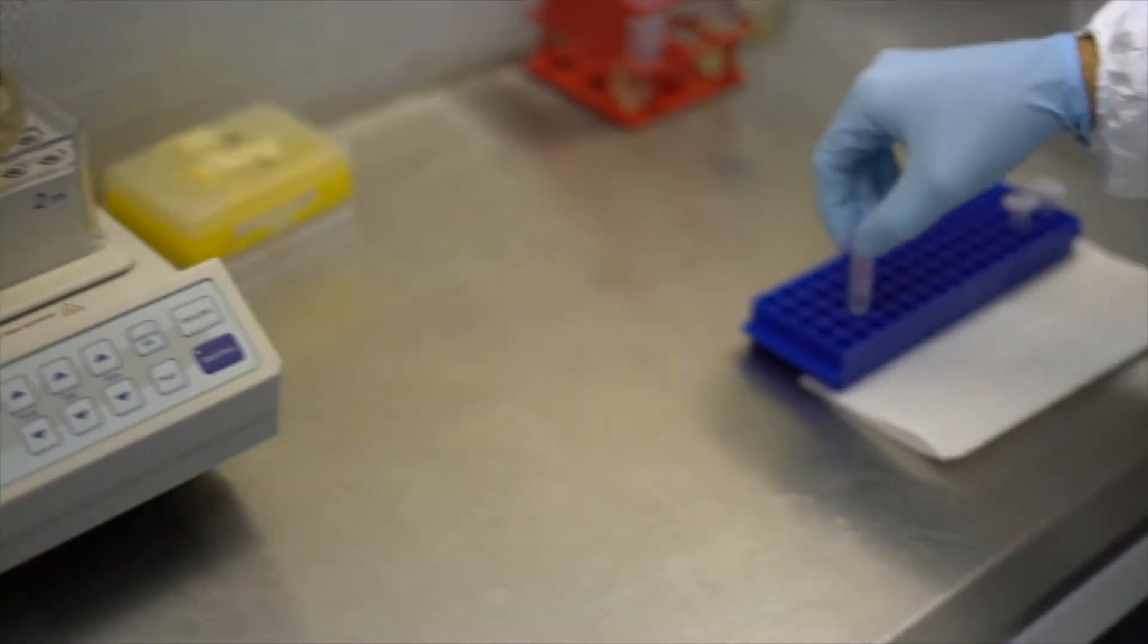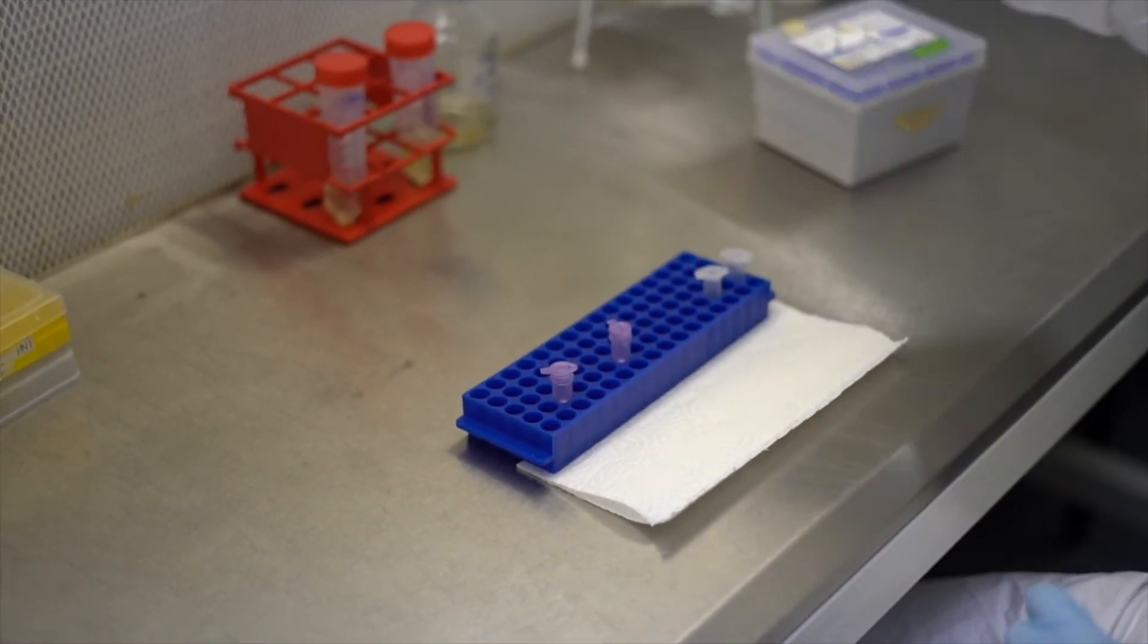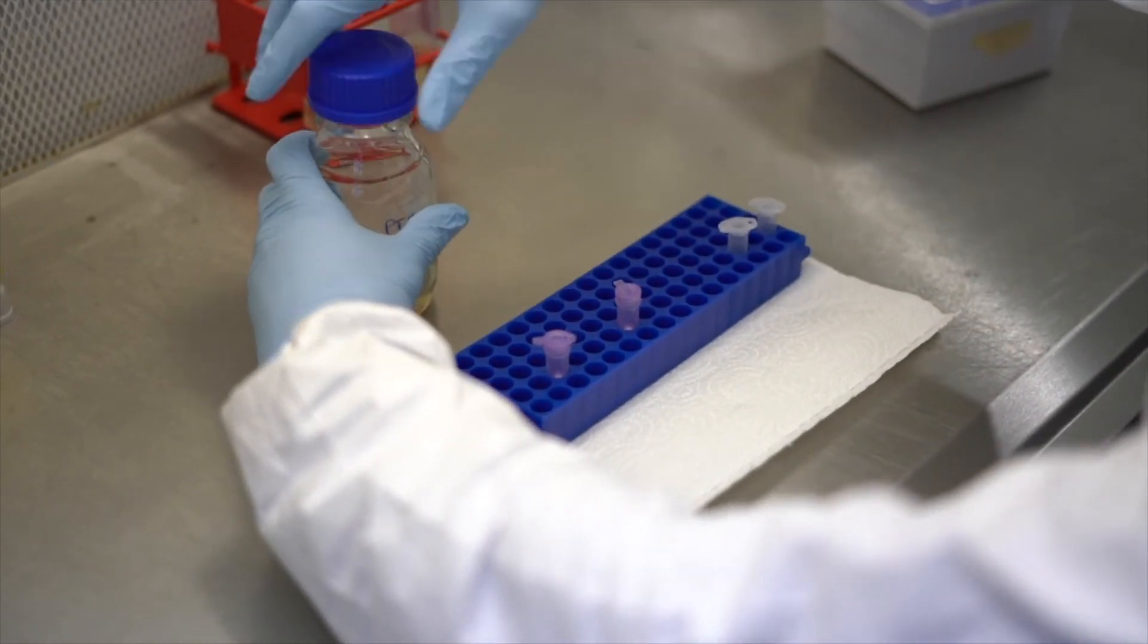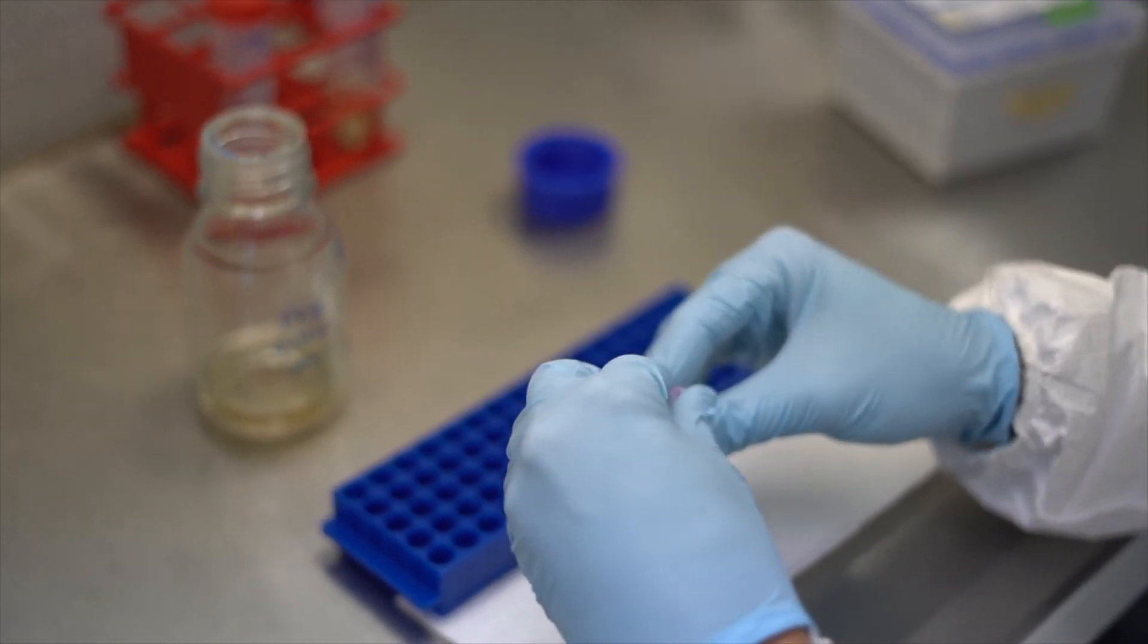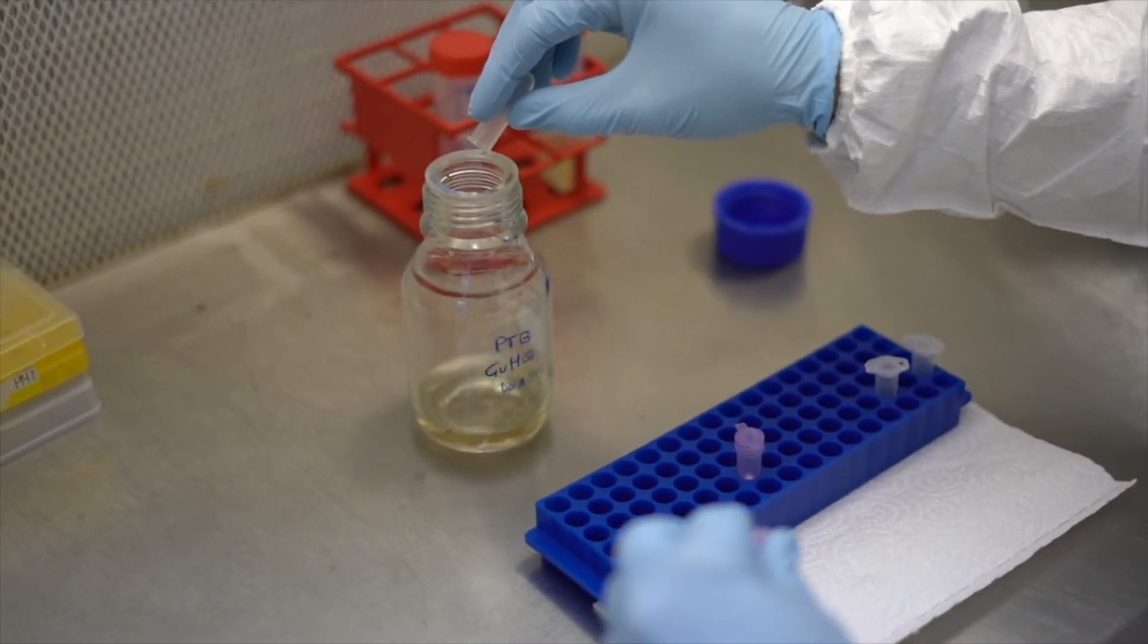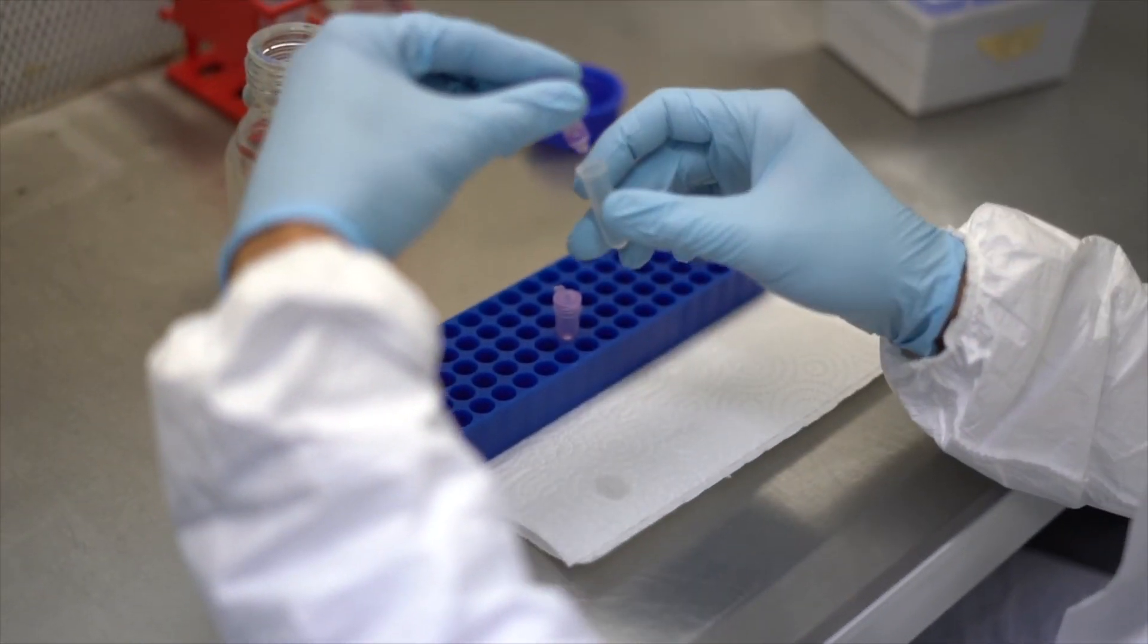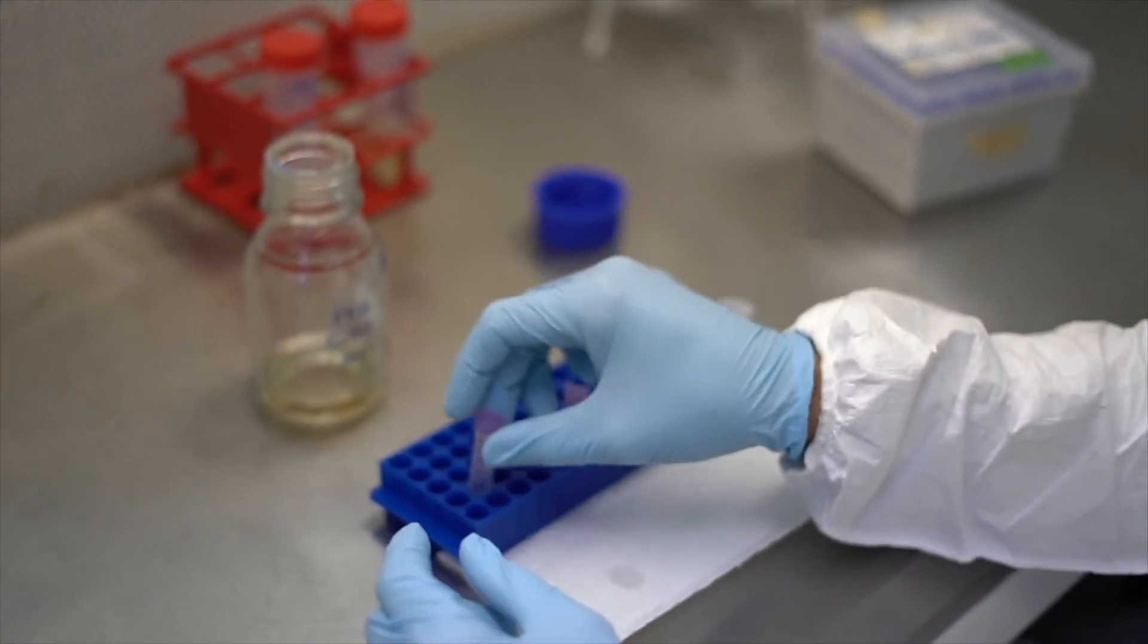We add again 700 microliters of the PE buffer and centrifuge again at 3300 g for 1 minute. Again we repeat the previous step. We discard the liquid and then we will centrifuge once at full speed. We will dry-spin it at full speed in the bench centrifuge. Be careful not to touch the bottom of the MinElute column with the collection tube.